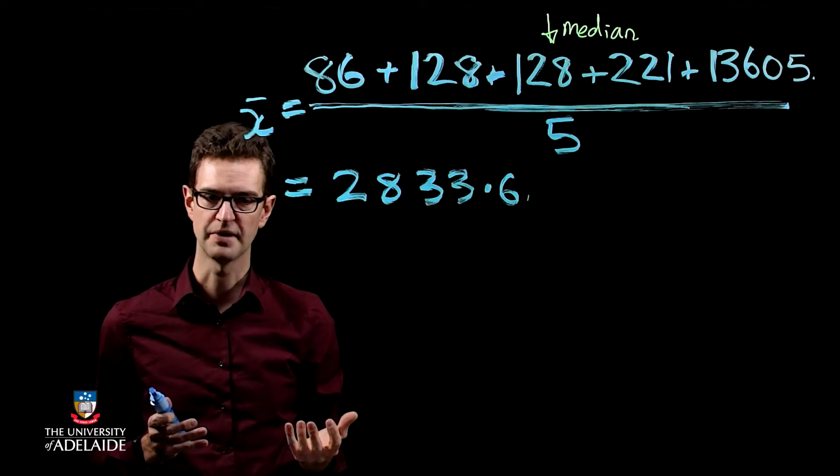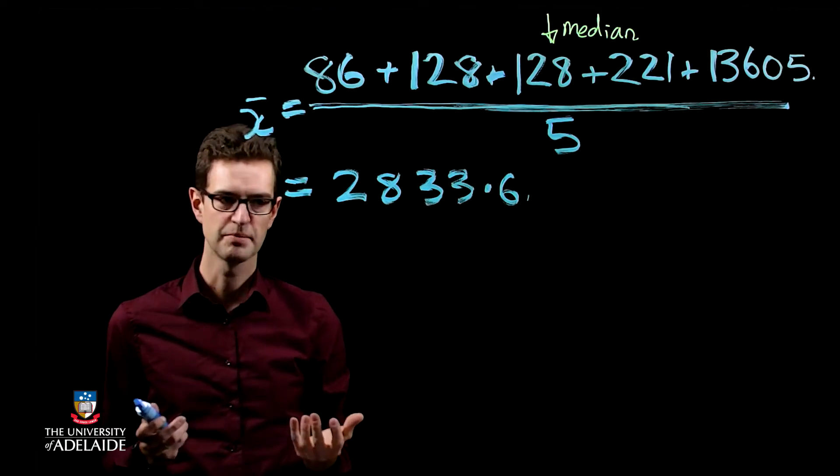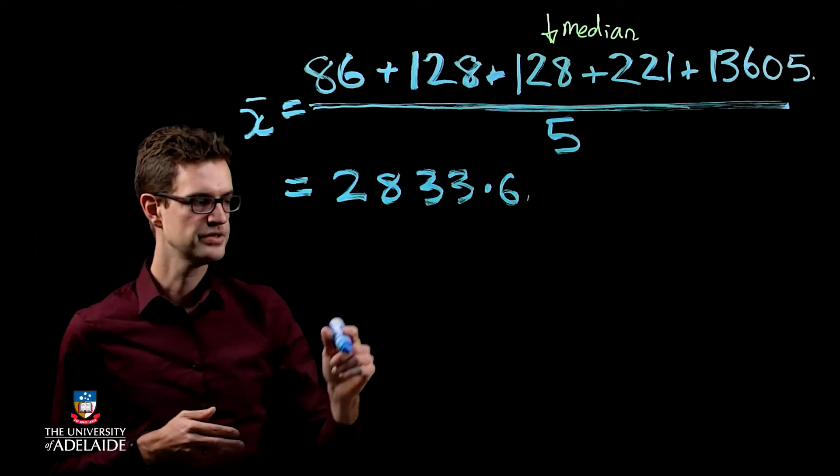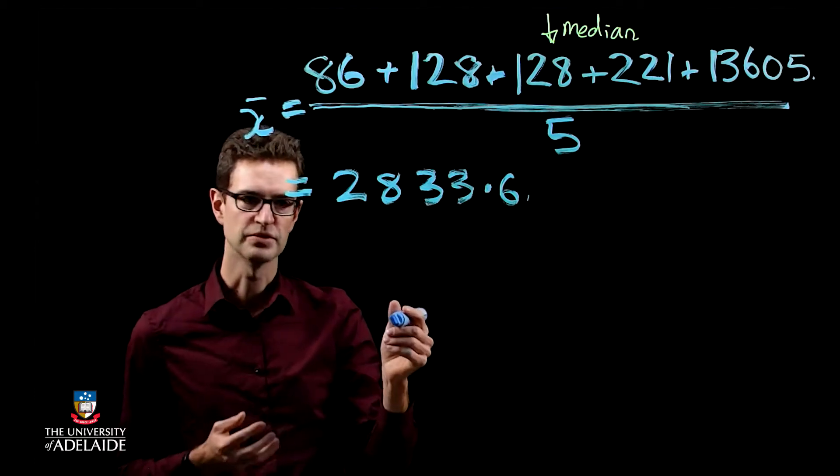So that's estimating the population location. The next thing is the population spread, and we can do that using something called the sample standard deviation.